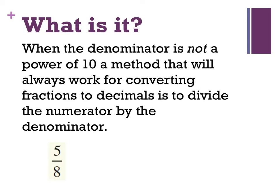When a denominator is not a power of 10, a method that will always work for converting these fractions to decimals is to divide the numerator by the denominator. So the first thing I have to do, that's 5 divided by 8. Now, I know when I write that down, I write 5 divided by 8. Now, I'm going to have a few remainders. So what I actually do is I pop a decimal point in there and I follow it by a few zeros. It doesn't matter to start with how many I write. I'm just going to write a few down.